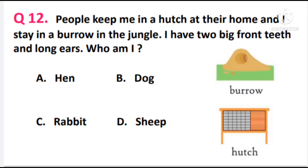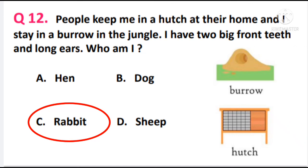Question 12. People keep me in a hutch at their home and I stay in a burrow in the jungle. I have two big front teeth and long ears. Who am I? The answer is option C — rabbit. A hutch is a cage-type enclosure made of a wooden frame and nets. We generally keep rabbits at home in a hutch, but rabbits make burrows in the jungle where they live.